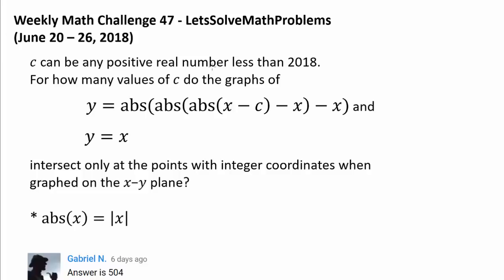C can be any positive real number less than 2018, and we wish to find for how many values of C the graphs of y equals the absolute value of the absolute value of the absolute value of x minus c, minus x, minus x, and y equals x intersect only at points with integer coordinates. That's an interesting question.